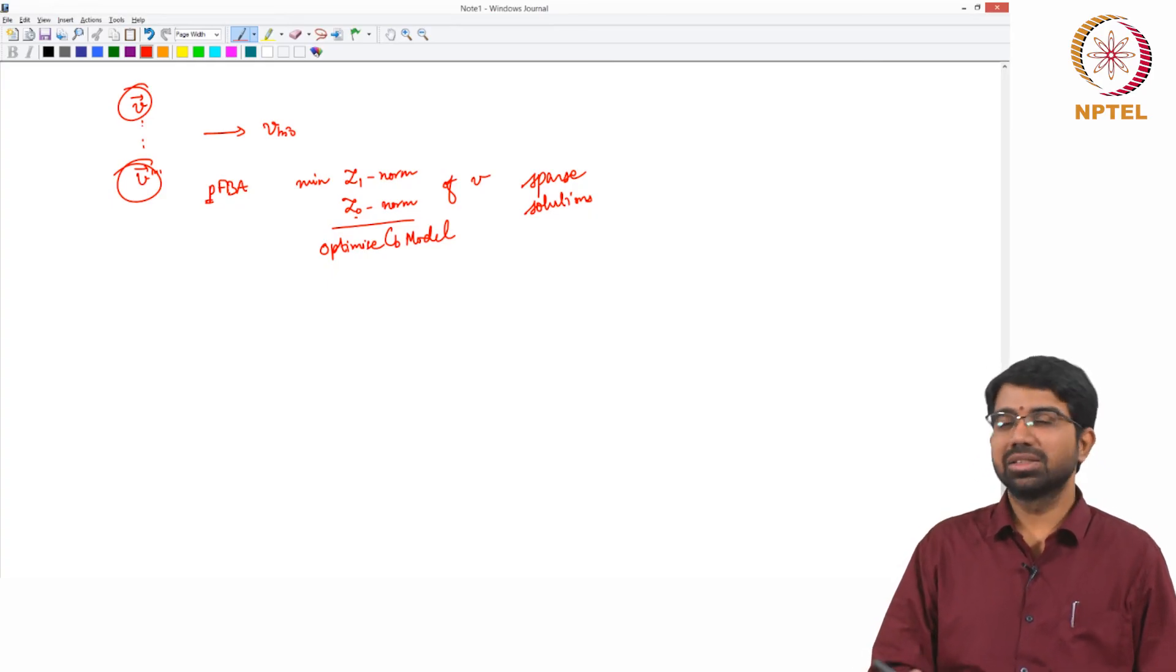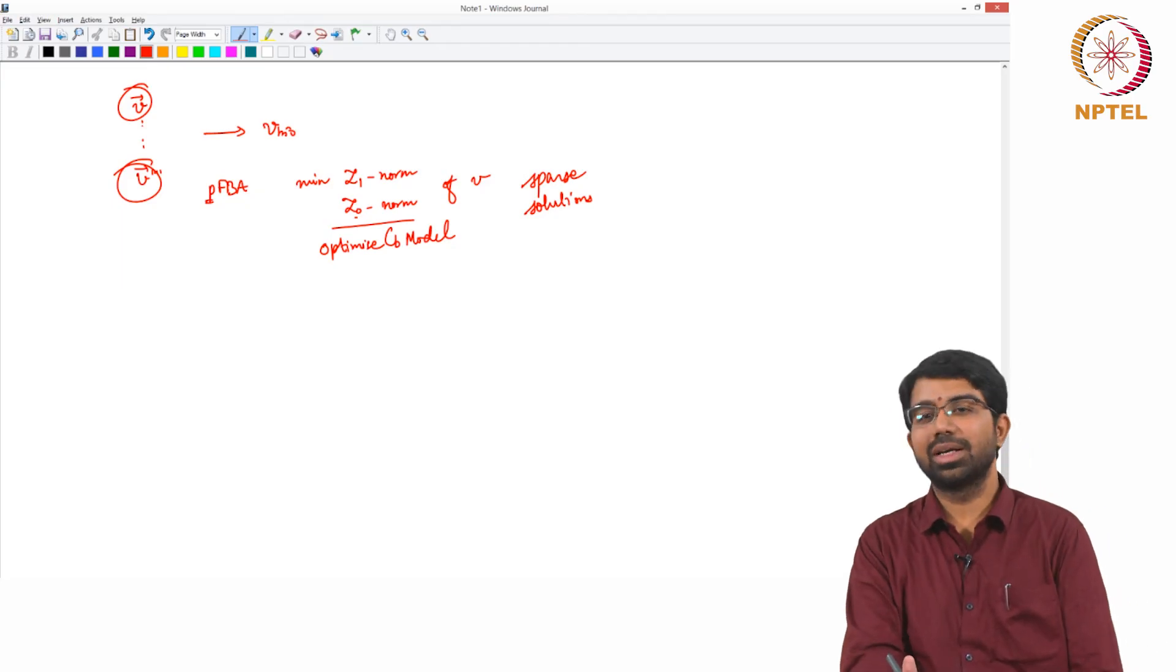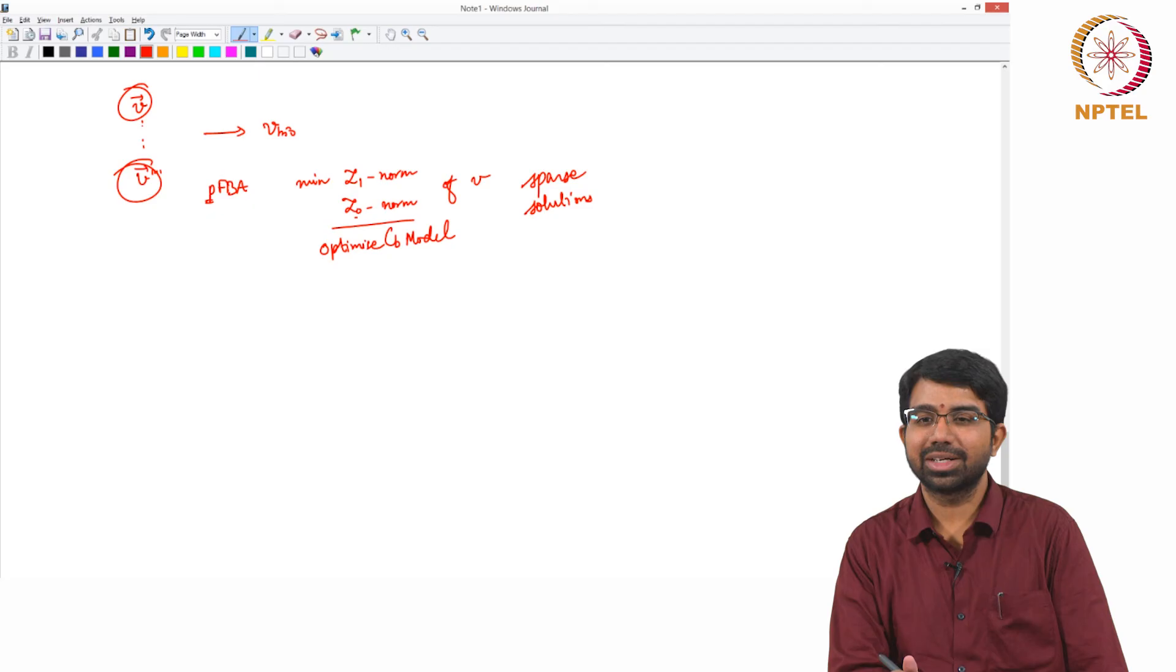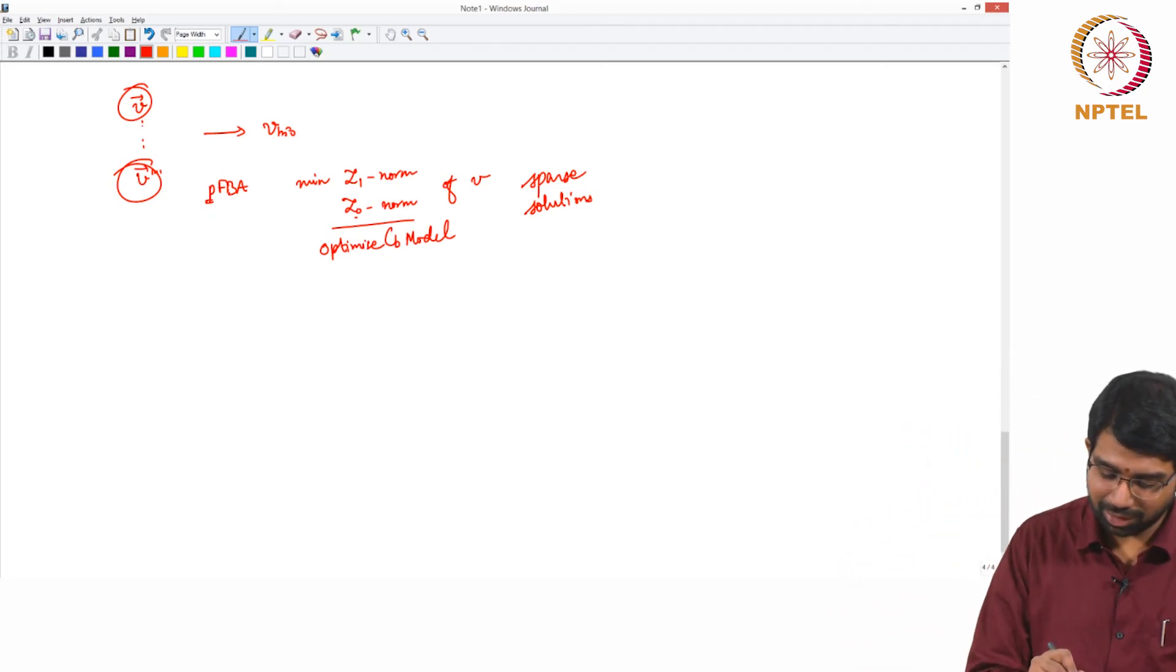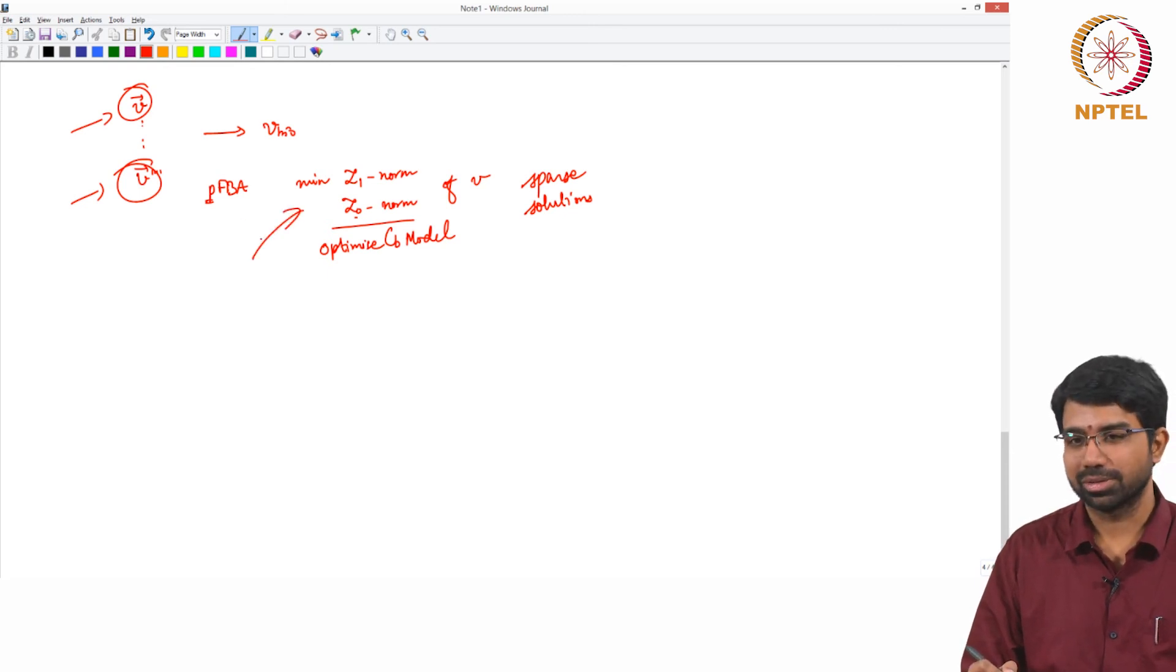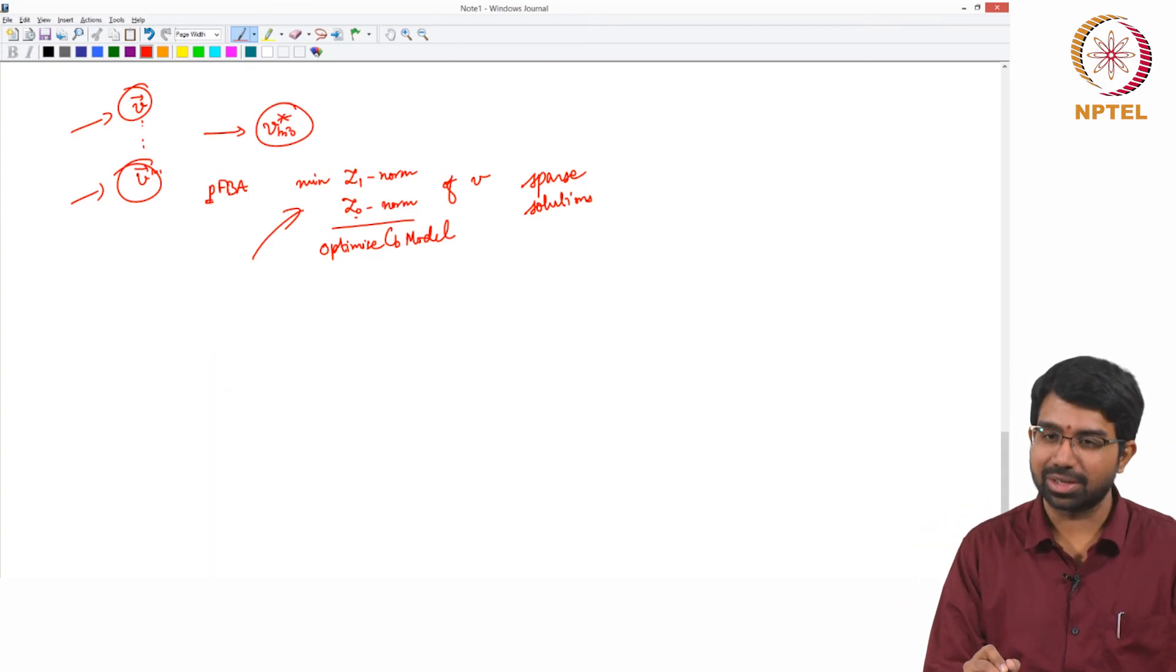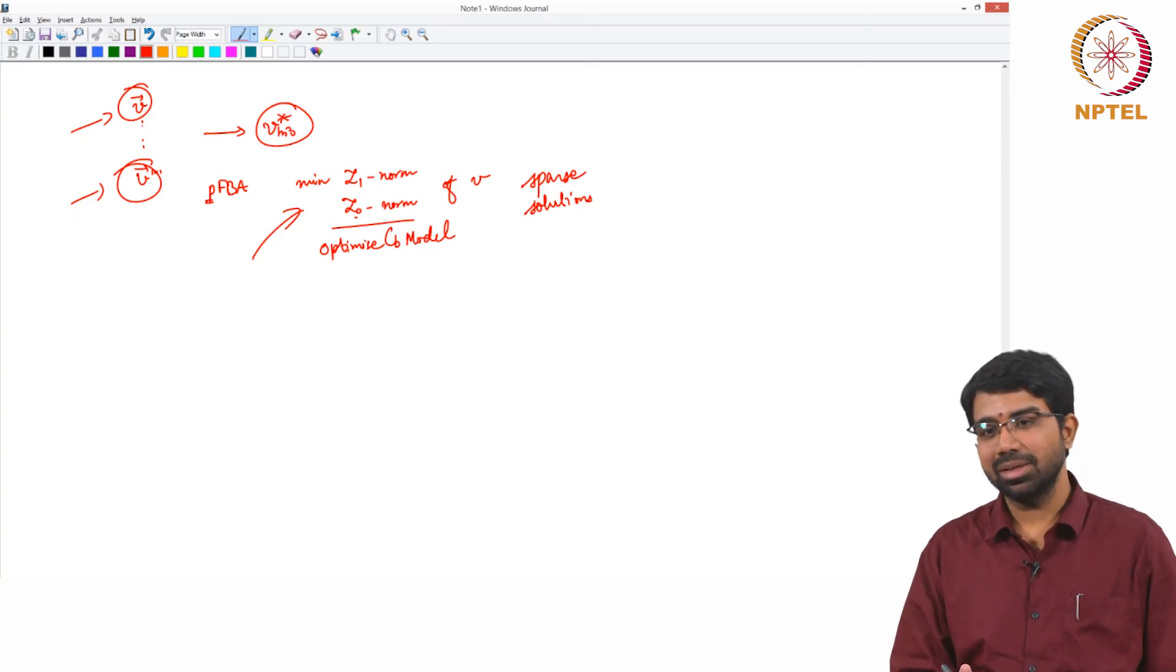And this is also somewhat related to solver artifacts and so on. So the solver will try to give you, so each solver depending upon the algorithm will arrive at one of these. So this gives you a handle to get a more unique solution. It may still not be unique, there is no guarantee about that. What is guaranteed of course is still your V_bio star is unique. But these solutions may still vary.